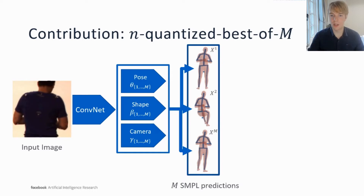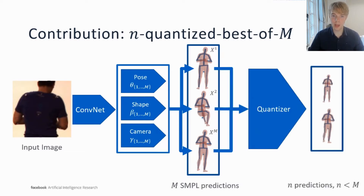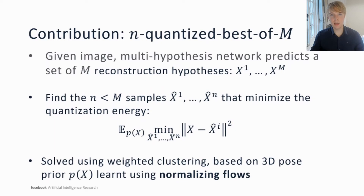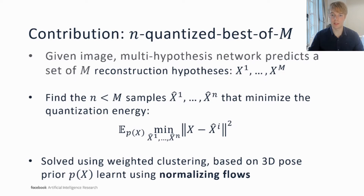However, one drawback with the min-of-M strategy is that the number of output hypotheses is fixed after training. To overcome this, we train a single min-of-M model with a large value of M and introduce a novel quantization scheme that acts at test time and can select subsets of an arbitrary size. The input to our quantizer is a set of M 3D human hypotheses produced by the min-of-M network. The quantizer's task is then to select an N-sized subset of the hypotheses that covers the space of the original M as well as possible. We also achieve better results by incorporating the likelihood of each 3D pose, which allows the quantizer to filter out poor quality predictions. We implement our quantizer using a weighted clustering of the M reconstruction hypotheses, where the weights are supplied according to a 3D pose prior, which we learn using normalizing flows.